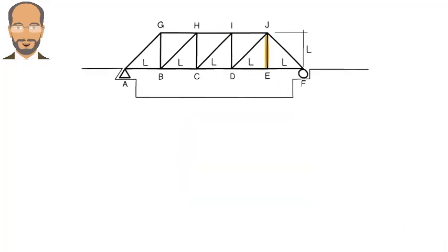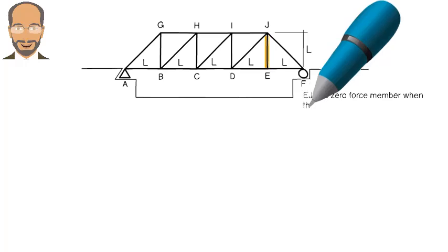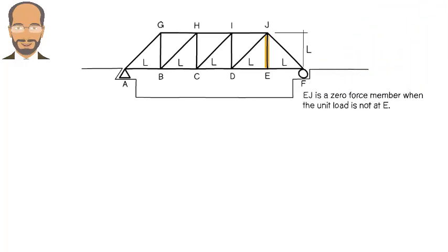A close examination of the truss and the member tell us that when the unit force is at any joint other than E, the member carries no force. EJ acts as a zero-force member. But, when the unit load is at E, the member carries an axial tensile force of 1.